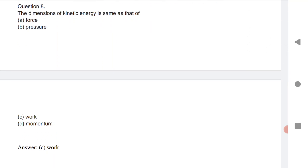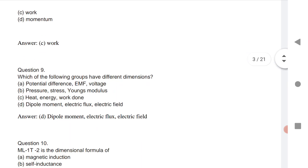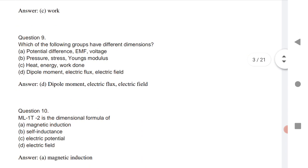Next is the dimension of kinetic energy same as that of work. We know that. Next is which of the following group have different dimensions?